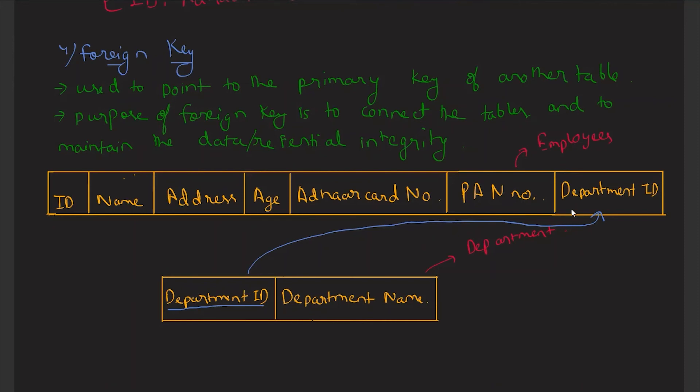The department ID in the employees table will be the foreign key because it is pointing to the primary key of another table — the department table. This department ID in the employees table is taking information from the department ID that belongs to the department table. So the foreign key references the primary key of the other table.